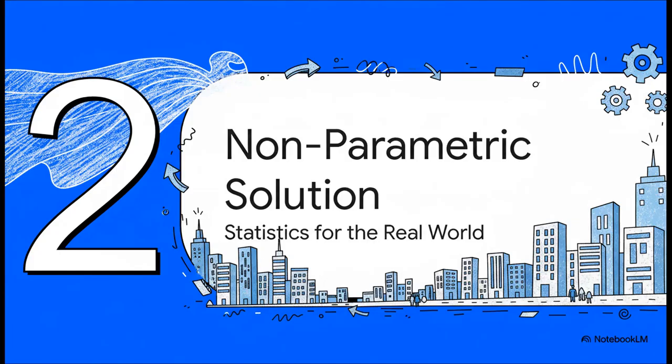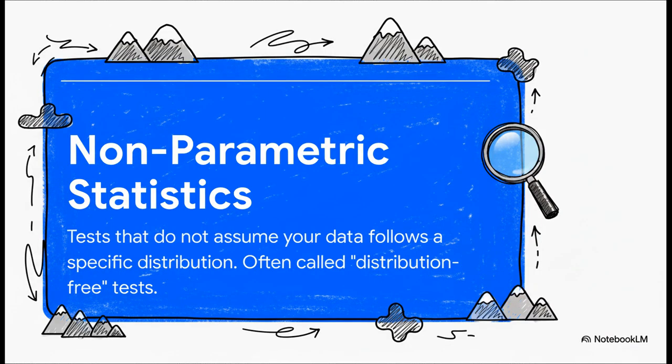But don't worry because there is absolutely a hero in this story. Non-parametric tests are the flexible, robust alternative. You can think of them as the statistics that were designed for the real world where data isn't always perfect. So what are they exactly? Well, simply put, non-parametric tests are methods that don't need our data to fit any specific shape or distribution. That's why you'll often hear them called distribution-free. They're like the all-terrain vehicles of statistics. They are built to handle the rough, bumpy landscapes of real data.